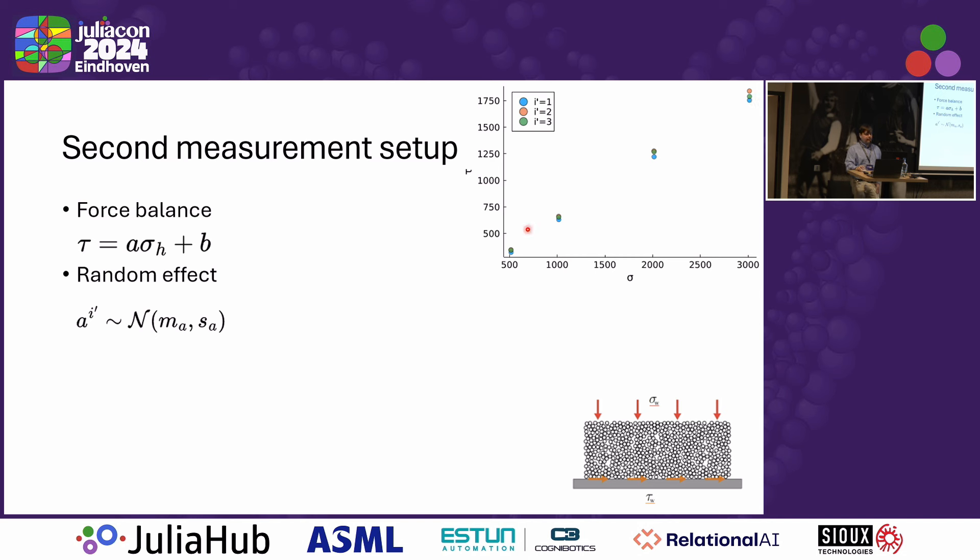This means that this slope A here is no longer just a single value. But no, we say that for each repetition of the experiment, A is drawn from a possible distribution of slopes, typically a normal distribution with a mean and a standard deviation. The goal shifts towards estimating this mean and this standard deviation.